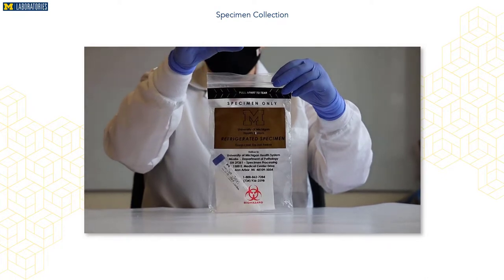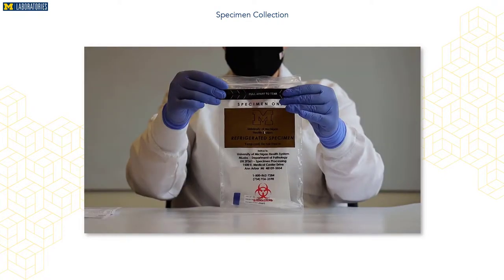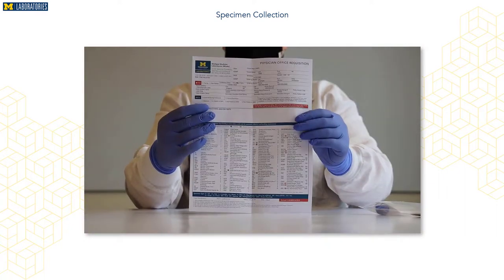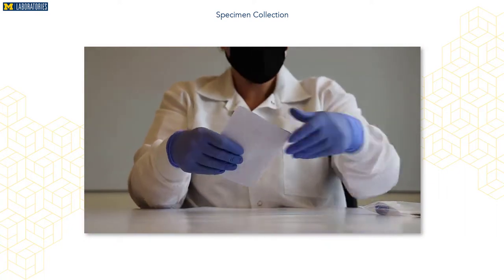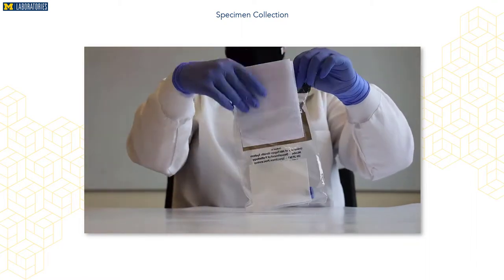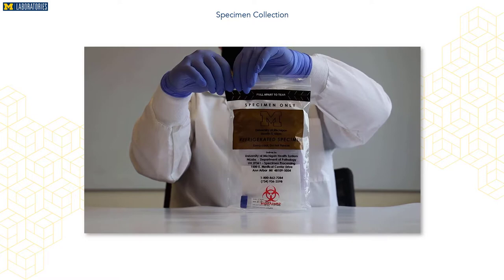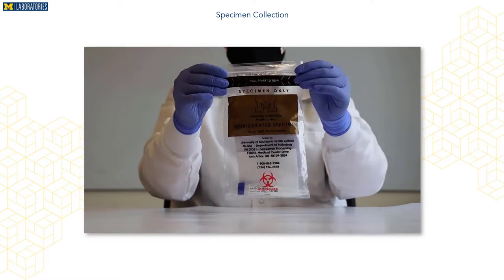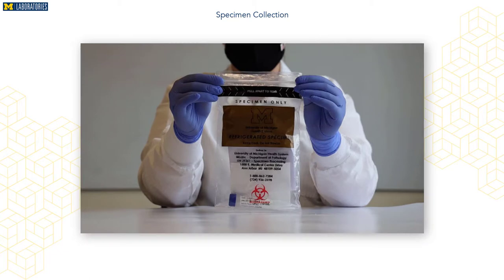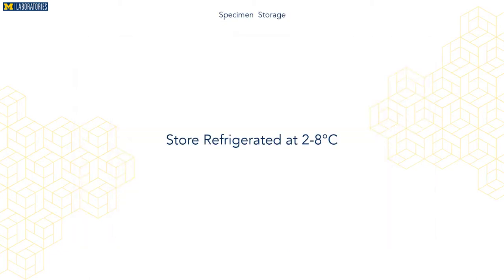Place the labeled specimen into the biohazard bag and place the requisition into the side sleeve of the biohazard bag, with the patient identifying information facing inward to maintain patient confidentiality. Securely seal the biohazard bag. If you are submitting a batch sheet for your specimen, include the batch sheet with the specimens. Appropriately dispose of waste and PPE and store the specimen refrigerated.